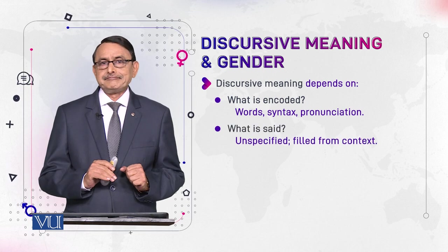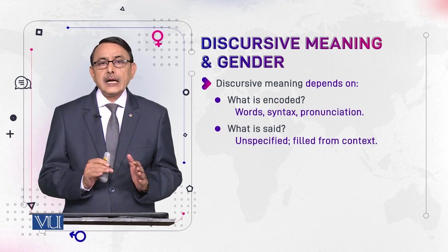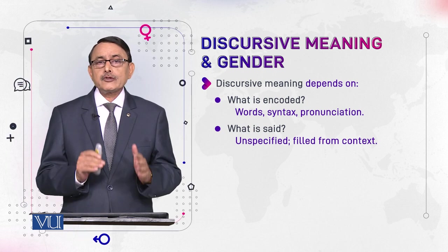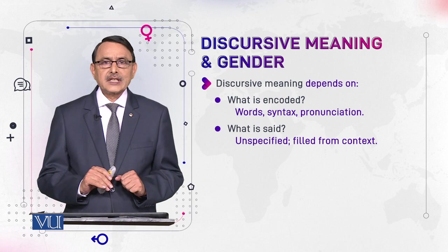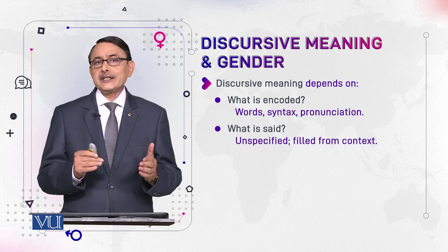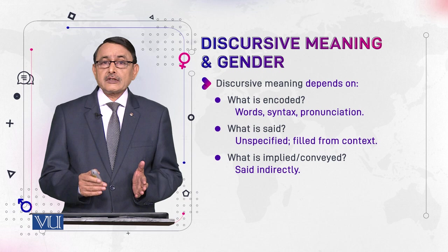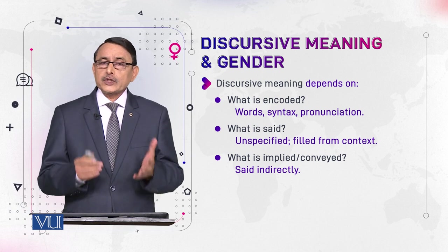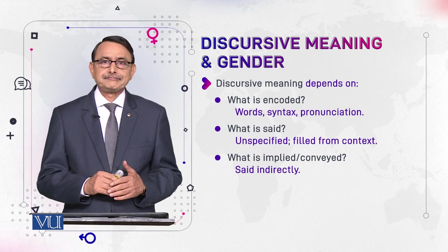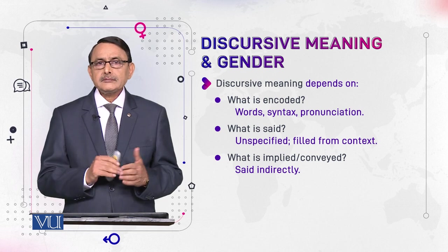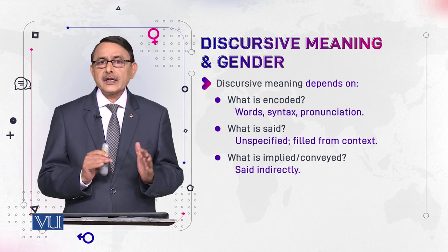The second stage is what is said. When you pronounce something, what you say actually has gaps — many things are not specified, and you hope the addressee would fill up these gaps. The third thing is: you say something and you don't say something when you utter it in a particular context. What you don't say is implied.